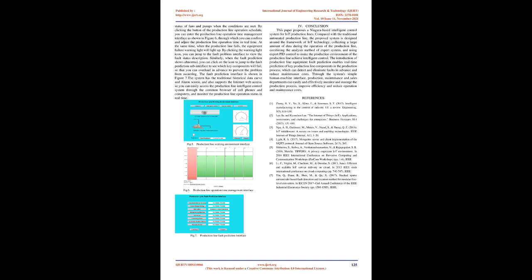In conclusion, this paper proposes a Niagara-based Intelligent Control System for IoT Production Lines. Compared with the traditional automated production line, the proposed system is designed around the framework of IoT technology, collecting a large amount of data during the operation of the production line, combining the analysis method of expert system, and using expert PID control to make the production environment of the production line achieve intelligent control. The introduction of production line equipment fault prediction enables real-time prediction of key production line components in the production process, which can detect and eliminate faults in advance and reduce maintenance costs. Through the system's simple human-machine interface, production, maintenance, and sales departments can easily and effectively monitor and manage the production process, improve efficiency, and reduce operation and maintenance costs.